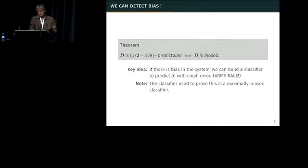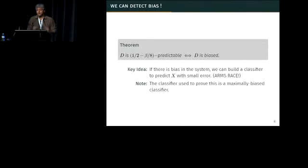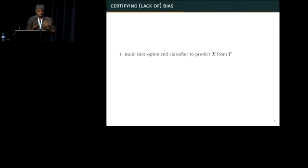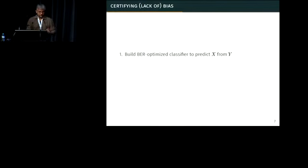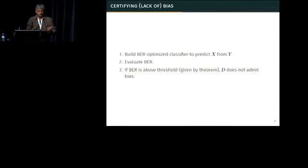So you can detect bias, and that's a good thing. If you have a data set that is problematic, you can say there's a problem here and you need to clean this data in some form. But if you do have a data set that's problematic and you want to remove the occurrence of bias, can you repair the data? To certify lack of bias, what you do is build a balanced-error-rate optimized classifier — there are many ways to do that — and you evaluate the balanced error rate for your particular task. If it's above the threshold, you admit bias.